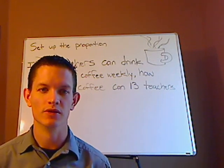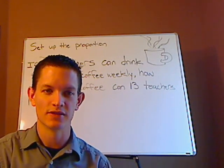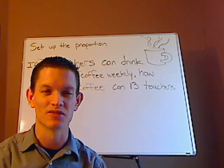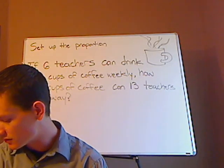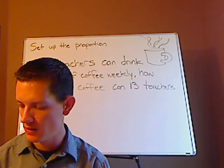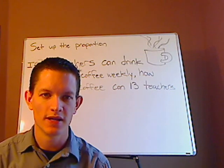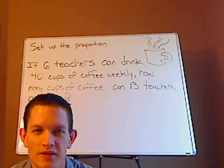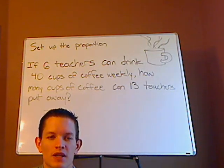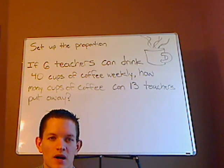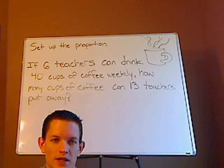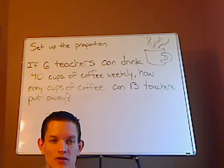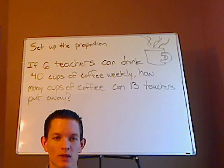Today what we're going to be doing is taking this word problem — not necessarily solving it, but just translating it into a proportion. The problem reads: if six teachers can drink 40 cups of coffee weekly, how many cups of coffee can 13 teachers put away? And it's implied that's also per week.